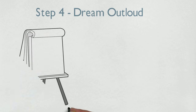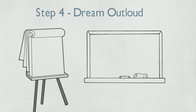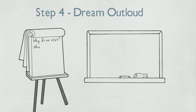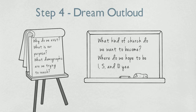Step number four: dream out loud. Use whiteboards or flip charts because a visual helps to spark thoughts and ideas. Have the team discuss and answer the following questions: Why do we exist? What is our purpose? What demographic are we trying to reach? What kind of church do we want to become? Where do we hope to be one, five, and ten years from now?